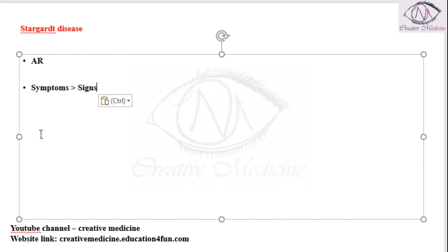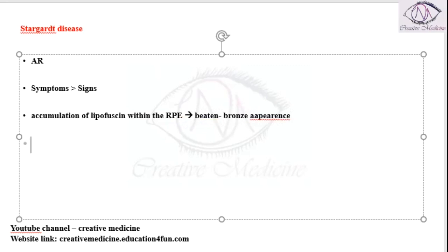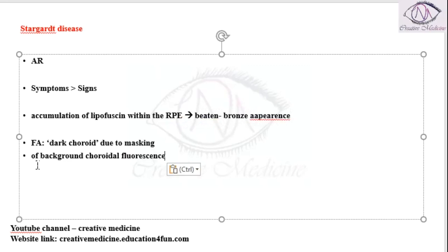In Stargardt disease, there is accumulation of lipofuscin in the retinal pigment epithelium, giving the appearance of a beaten bronze appearance. On fluorescent angiography, a dark choroid is seen.